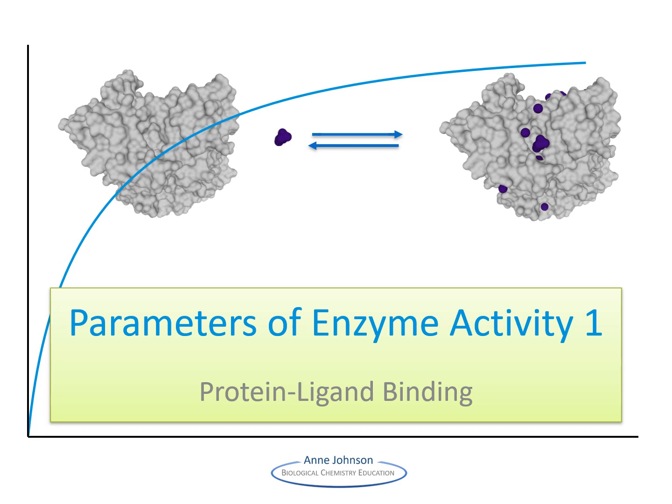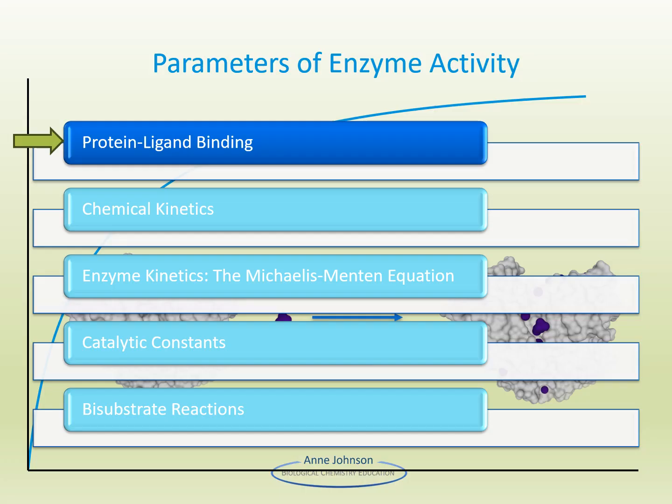Welcome to Enzyme Kinetics, a series of short videos about enzyme kinetics. Enzymes have two measurable important events: they bind to the substrate and they catalyze a reaction. In this section of our video series on enzyme kinetics, we will discuss protein ligand binding.